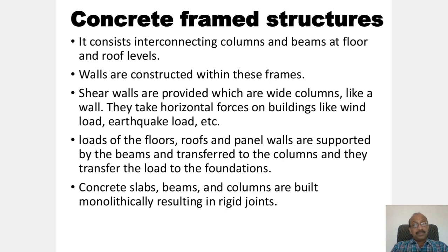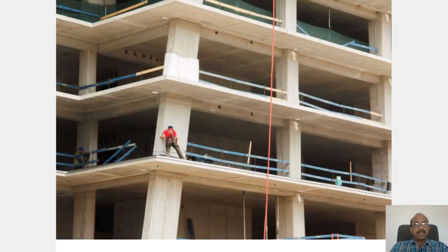Concrete frame structures consist of interconnecting columns and beams at floor and roof levels, with walls constructed within these frames. Shear walls are provided — these are wide, column-like walls that take horizontal forces on the building such as wind load and earthquake load. Loads on the floor, roof, and panel walls are supported by the beams and transferred to the columns, which transfer the load to the foundation. Concrete slabs, beams, and columns are built monolithically, resulting in rigid joints. Here we can see a concrete structure with beams and columns.